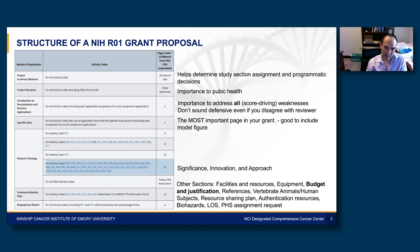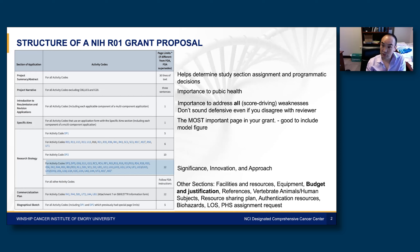Research strategy is 12 pages. It has a significance, innovation, and approach section — these are all score-driving sections. Other sections include biographical sketch, five pages, and then there are a bunch of other sections like facility and resources and equipment, which go into your environment score. There's budget and justification. Most people now submit non-modular budgets because $250K is hard to get a lot of things done — you're hiring maybe two postdocs. I don't think it's unreasonable for an early-stage investigator to submit a non-modular budget.